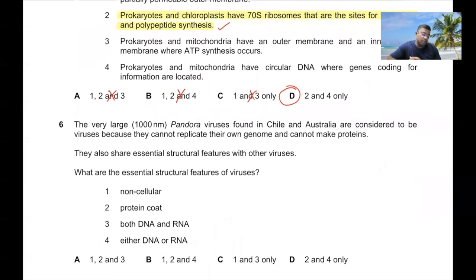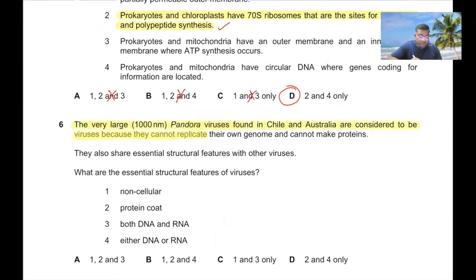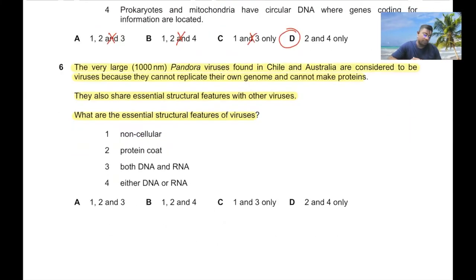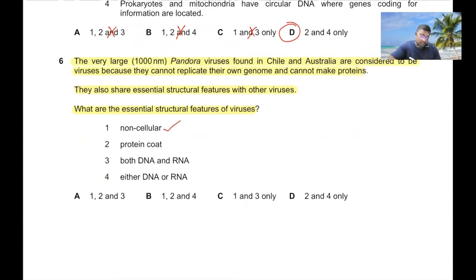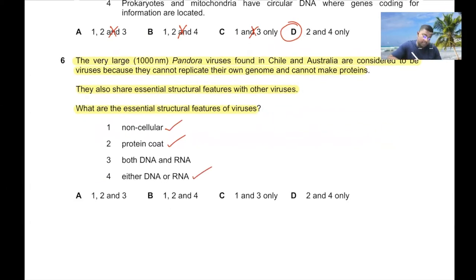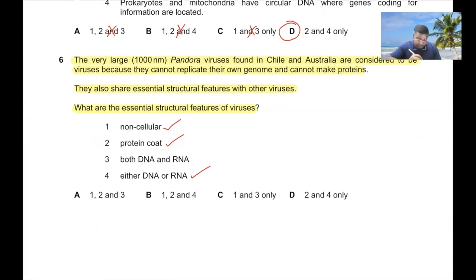Question 6: The very large Pandora virus is considered a virus because it cannot replicate its own genome or make its own proteins, and shares essential structural features with other viruses. Viruses must be non-cellular, must have a protein coat, and should have either DNA or RNA — not both. So question number 6, option B.